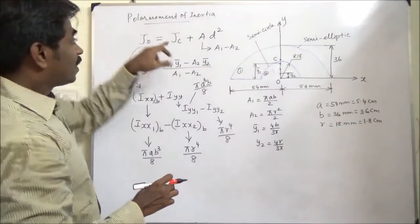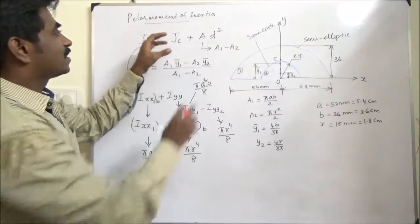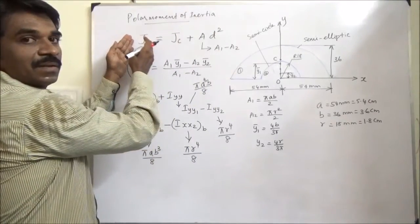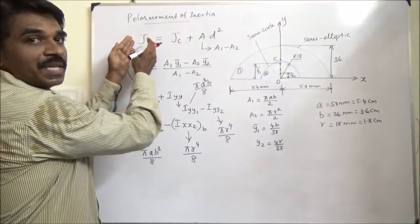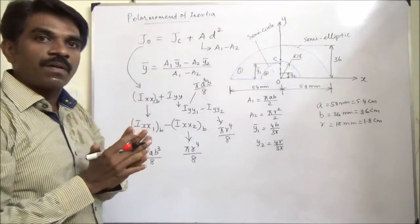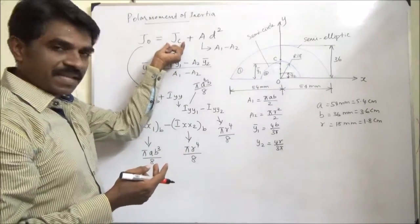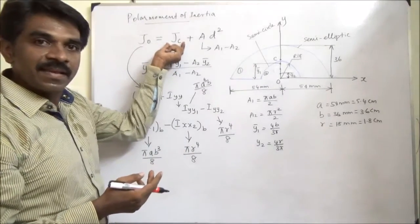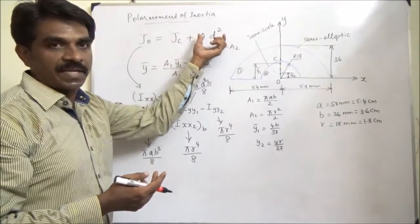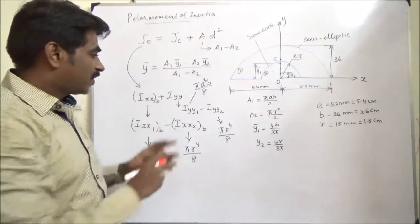Then how can we find out J_C? By subtracting the quantity A·d² from J_O, we can get J_C. Or we can also find J_C directly, and then find J_O by adding that quantity.